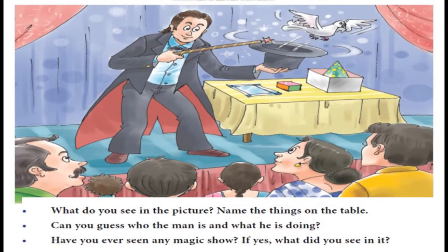Bacchon, aapko ye picture dikhahi deh rehi hogi. What do you see in this picture? Name the things on the table. Aapko batana hai ki table ke oopar kya kya things rakhi hai — jaise box hai, book hai, hankerchief hai. Can you guess who the man is and what is he doing? Kya bata saktay hain ki ye aadmi kaun hai aur ye kya kar raha hai?